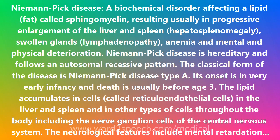The classical form of the disease is Niemann-Pick disease type A. Its onset is in very early infancy and death is usually before age 3. The lipid accumulates in cells called reticuloendothelial cells in the liver and spleen, and in other types of cells throughout the body, including the nerve ganglion cells of the central nervous system.